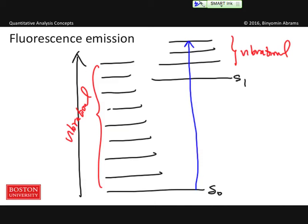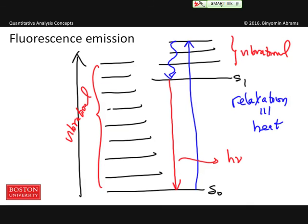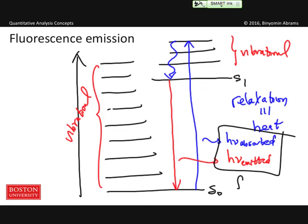Pathway number one, we can have a relaxation transition. Relaxation just means heat. And so heat is given off as the vibrational energy is given off back down to the ground state. And now, a photon can be emitted. But notice here, H nu emitted is going to be lower in energy than H nu absorbed. This process is called fluorescence and leads to a photon of lower energy, lower frequency, and larger wavelength than the photon that's absorbed.